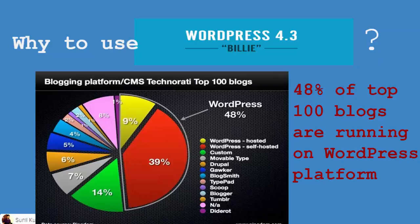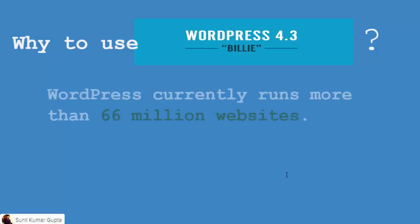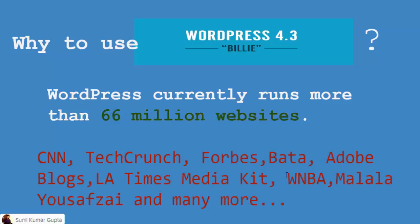48% of blogs are running on WordPress, and here are a few more facts. Currently 66 million websites are running on WordPress — it's a rough estimate and the actual number is much more. Some popular websites using WordPress include CNN, TechCrunch, Forbes, Bata, Adobe Blocks, LA Times, Mediakit, WNBA, and Malala Yousafzai's site, among many more.